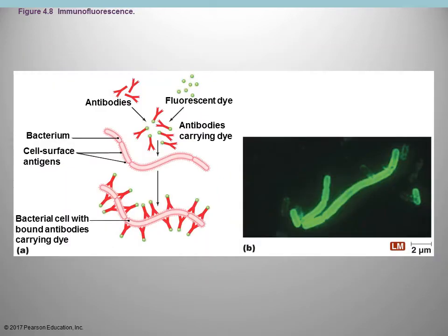Immunofluorescence is used for diagnostic purposes to detect a certain bacteria in a patient sample. You add antibodies that bind to the bacteria, and on the other end of the antibody you have a fluorescent dye. If the antibody attaches, the whole organism glows. Confocal microscopes also use fluorescent dyes, the resolution tends to be increased, and you can generate three-dimensional images using this.